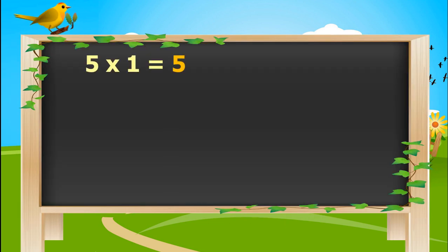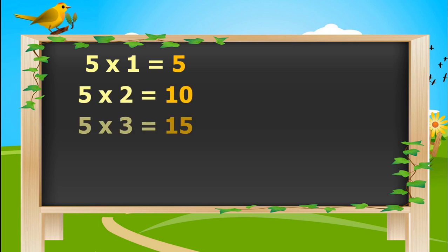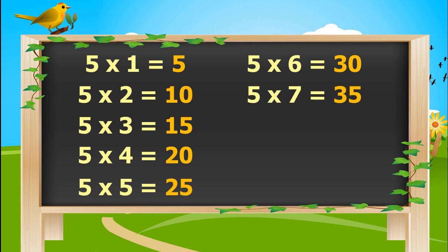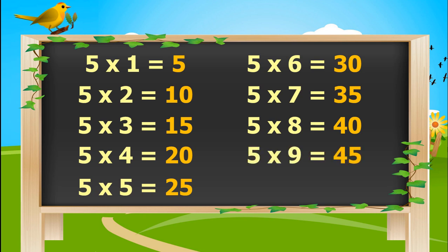5 times 1 is 5. 5 times 2's are 10. 5 times 3's are 15. 5 times 4's are 20. 5 times 5's are 25. 5 times 6's are 30. 5 times 7's are 35. Five eights are forty. Five nines are forty-five. Five tens are fifty.